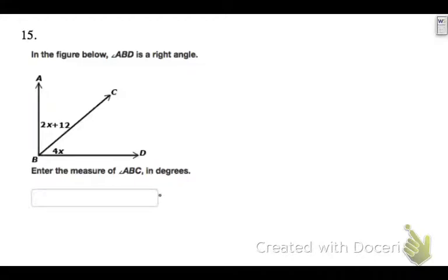This question involves a complementary angle because we know the total number of degrees here is 90. The question says you're looking for ABC, which is this part of that angle. So if we're looking for this piece of this angle but we know the total is 90, we can set up an equation.